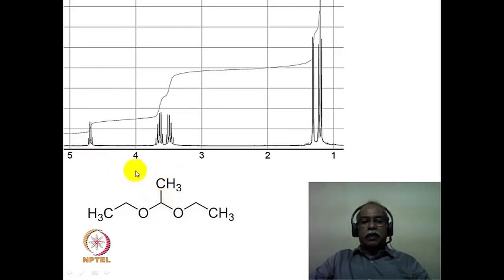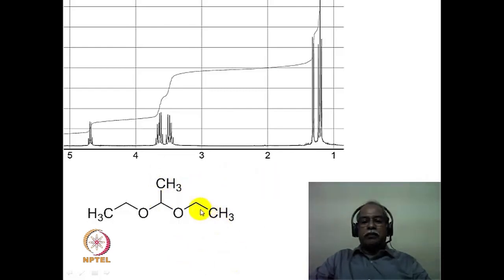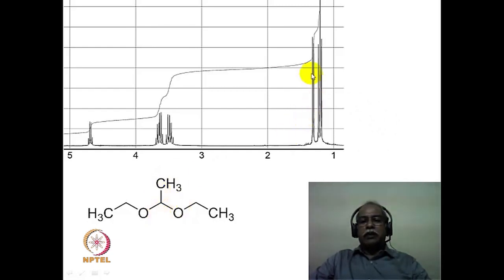That hydrogen is a quartet because it is split by the adjacent methyl group — three adjacent hydrogens. Now what happened to the methyl itself? The methyl is split into a doublet, and you can see a doublet here. This methyl is split by the methine hydrogen into a doublet, and you can see the methyl group with 3 hydrogen intensity appearing as a doublet in the region of about 1.3 ppm or so.